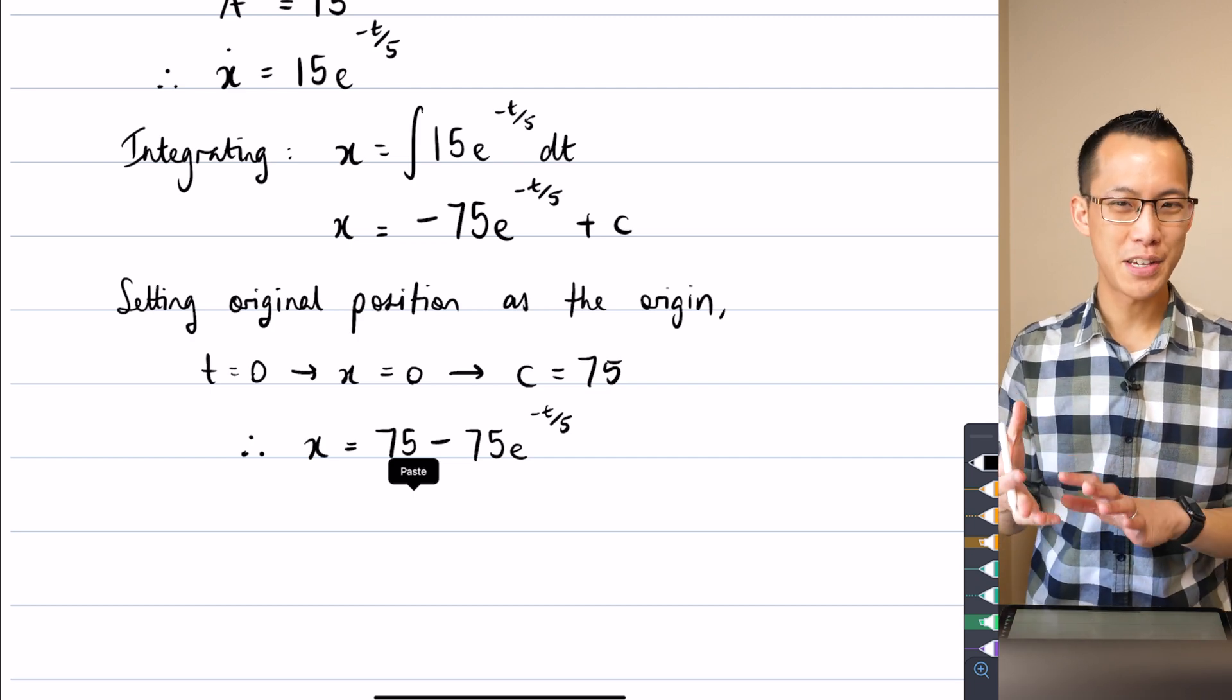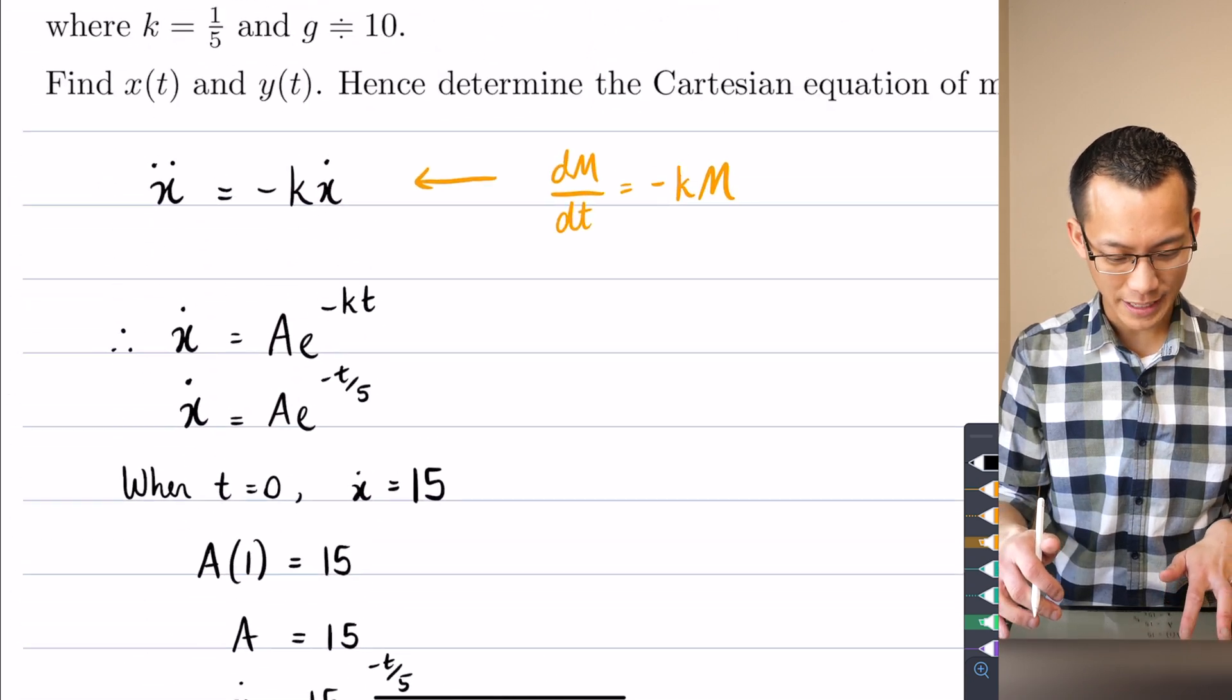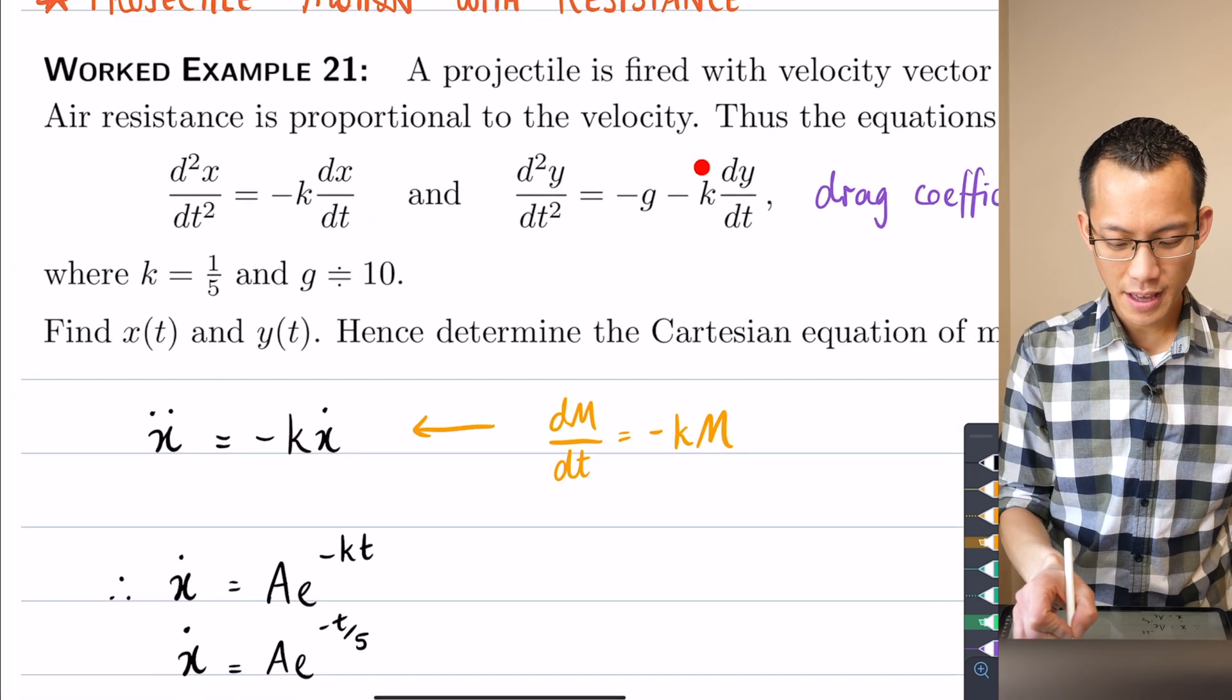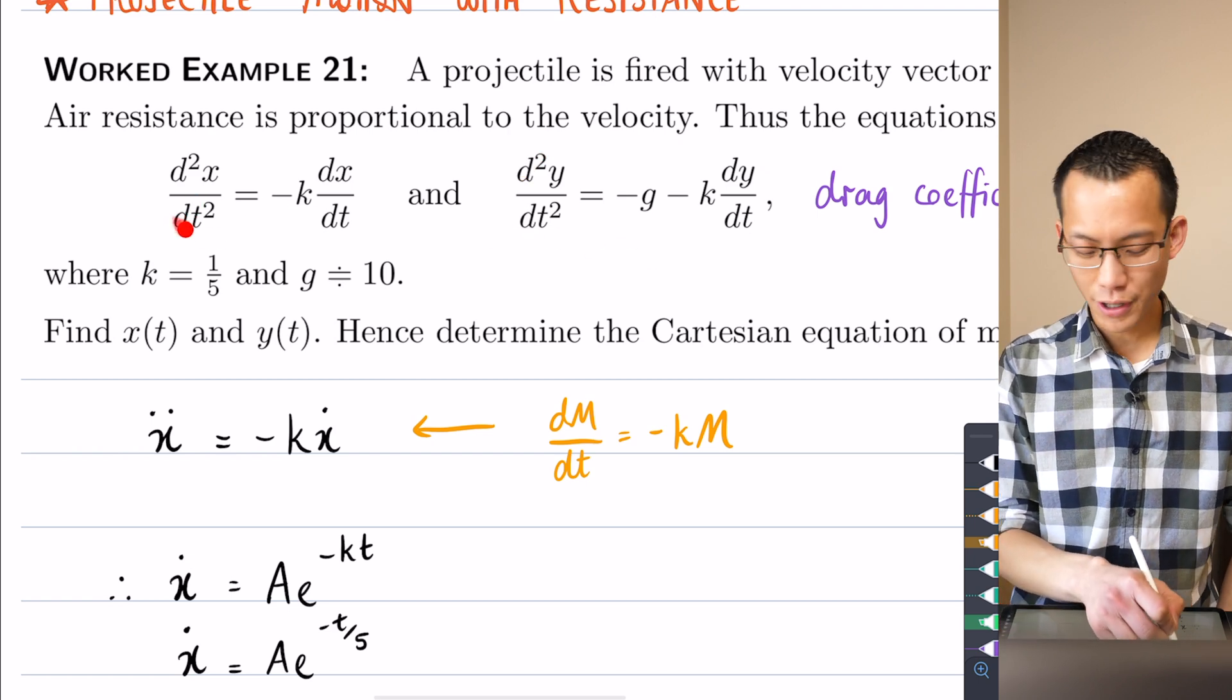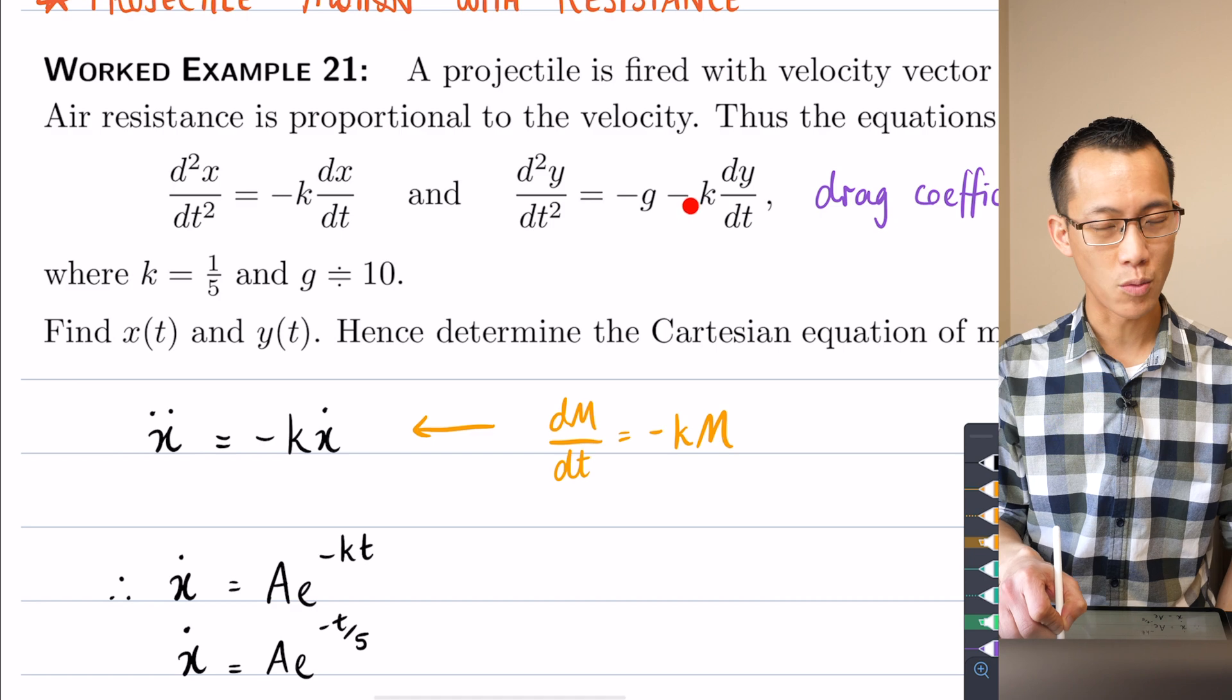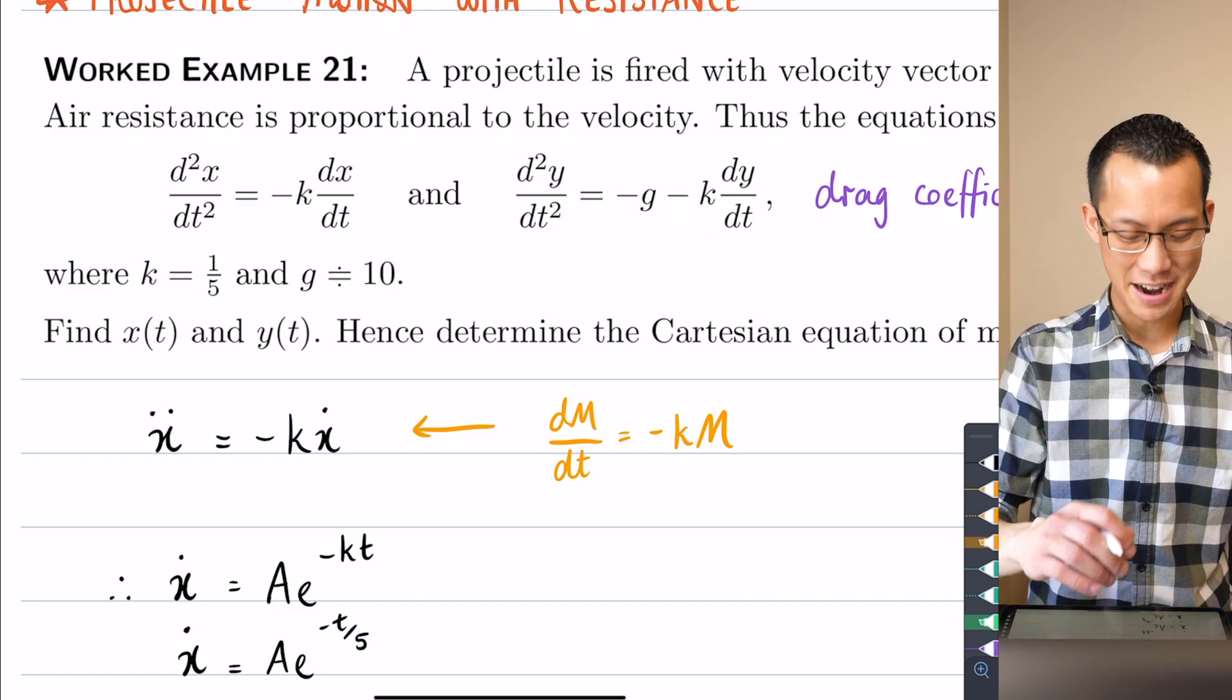What we want to do now is apply a similar process to think about the vertical motion. So if you go back up to here, you can see this is the differential equation that I've been presented with. And instead of x double dots and x dots, I'm going to get y double dots and y dots, right? So I'm going to, as promised, nudge you in the right direction.